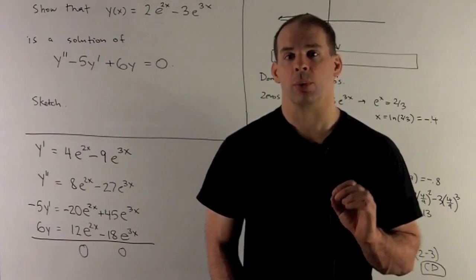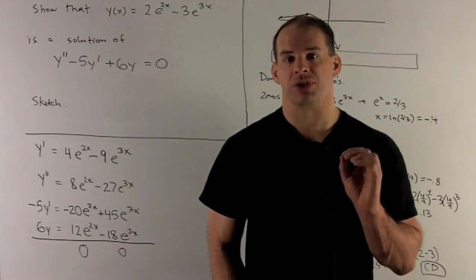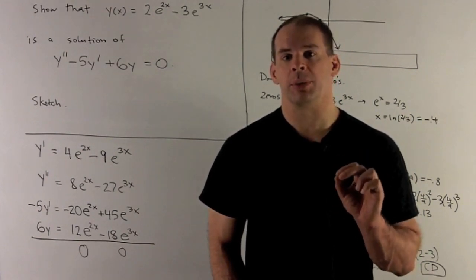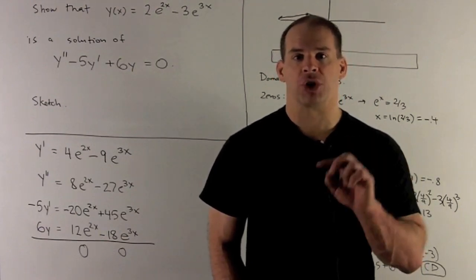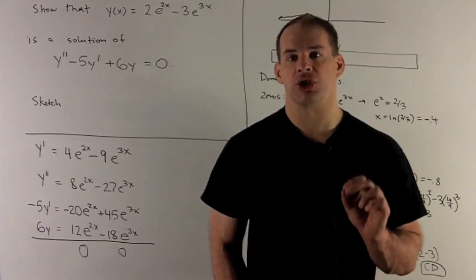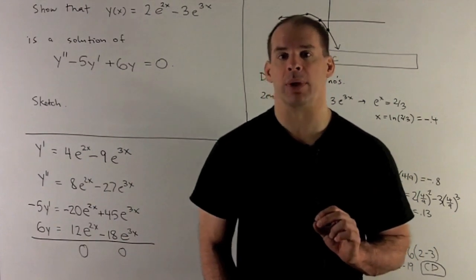First we want to show that our function is a solution. So we'll need to compute y' and y'', arrange terms as they are in the equation, and then show that zero comes out when we add them up.